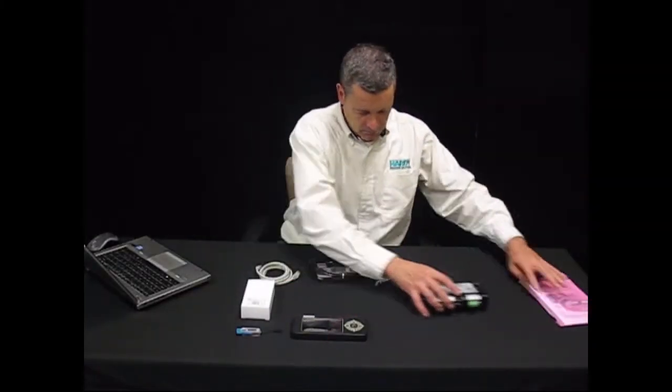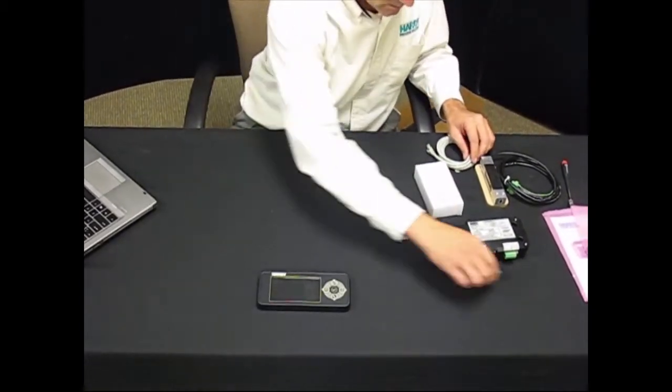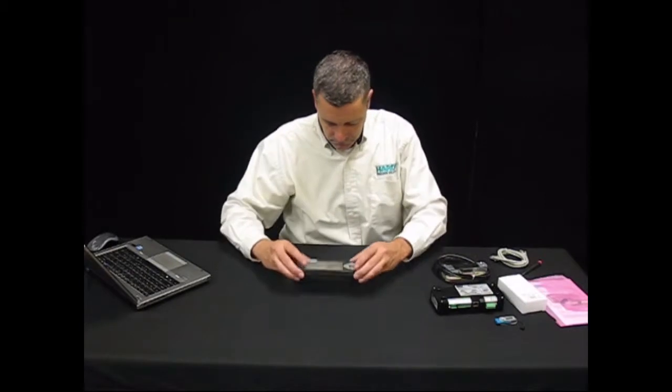First, clear some workspace so you can connect everything. Lay your display face down in front of you on a table or bench. Find the small pink accessory bag and pull from it the pre-assembled cable.